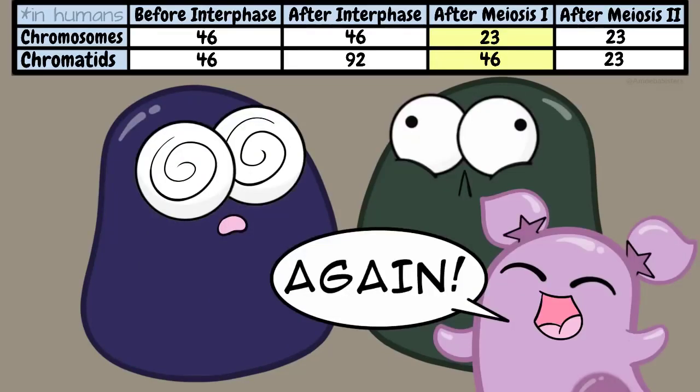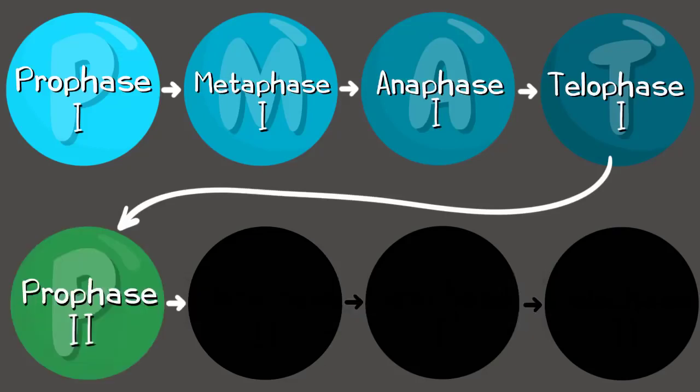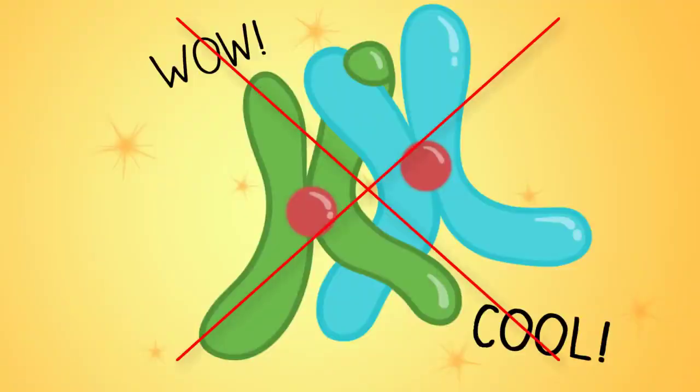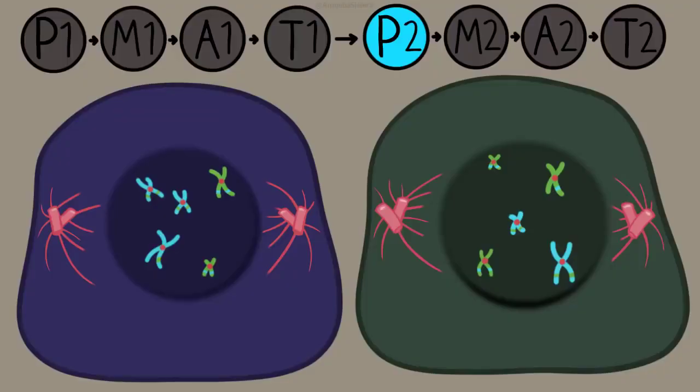But we're not done yet. Onto meiosis two. The very first step in meiosis two is prophase two. It's not going to be nearly as eventful as it was in prophase one though because they're not going to have homologous pairs of chromosomes. They also are not going to have this amazing process called crossing over that doesn't happen again in prophase two. You have your chromosomes and the spindles are starting to form like they did in prophase one.